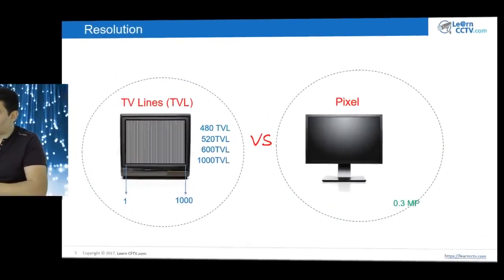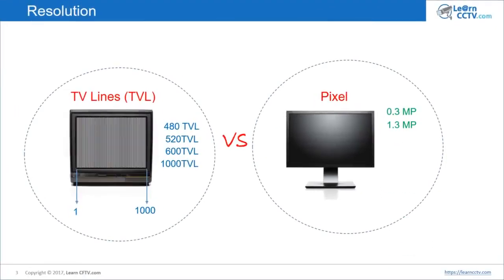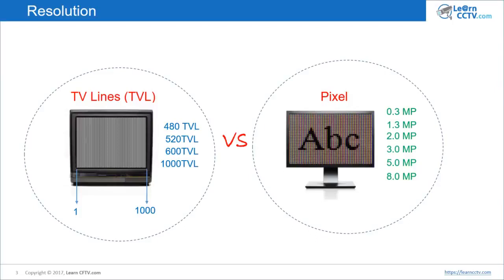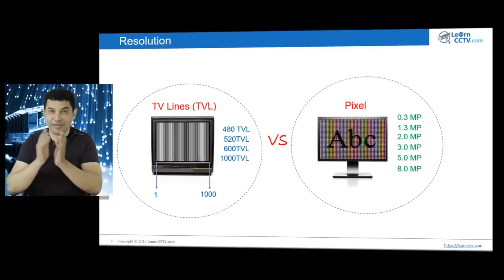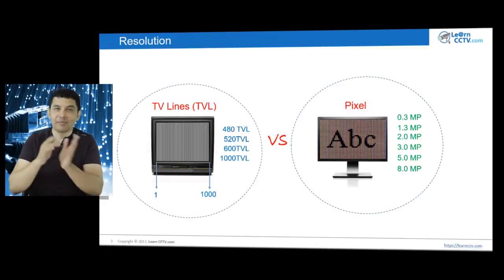With an IP camera, you have 0.3 megapixels, for example, or 1.3, 2 megapixels, 3, 5, 8, and even higher resolution in other IP cameras. Those pixels are going to fill your screen. That's the difference between TV lines and pixels in the analog system versus pixels in the digital system.